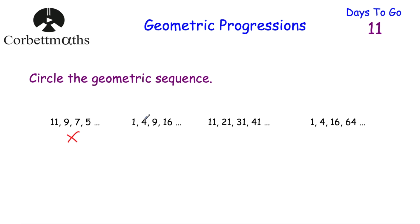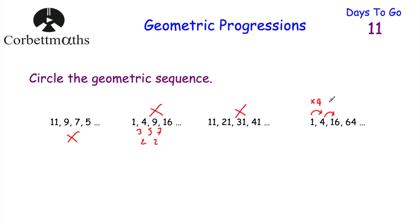The third sequence is clearly linear — we're adding 10 each time. The last sequence: to get from 1 to 4, we multiply by 4. From 4 to 16, multiply by 4. From 16 to 64, multiply by 4. So that is a geometric sequence — that's the one you should circle. Well done if you got that.